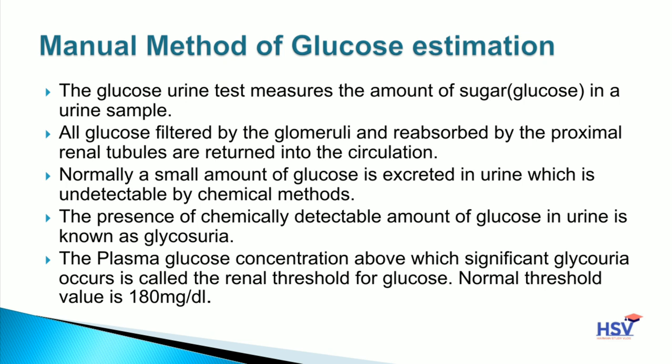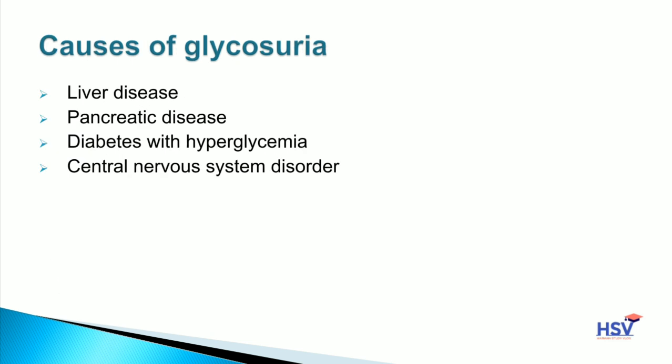The plasma glucose concentration above which significant glycosuria occurs is called the renal threshold for glucose. The normal threshold value is 180 mg/dL. अगर plasma में glucose की concentration 180 mg/dL से ज्यादा हो जाती है तो glucose kidney के through urine में आनी start हो जाती है।